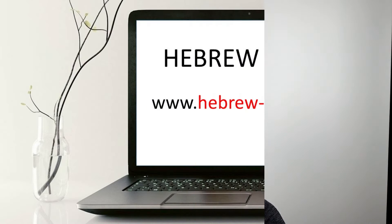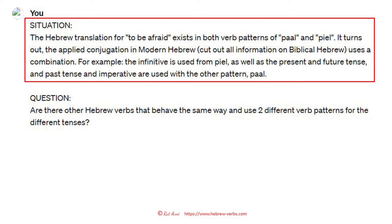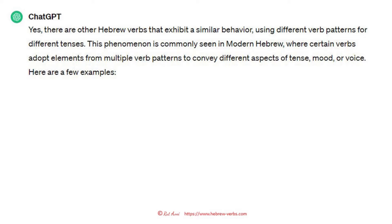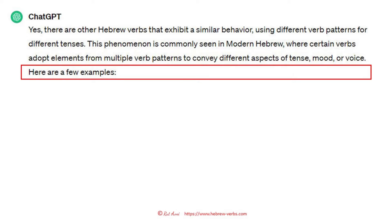So this is how it went, this is how I approached ChatGPT. I first described the situation we had with the verb 'to be afraid' — that it exists in both verb patterns, paal and piel. And now the question: are there other verbs that behave the same way and use two different verb patterns for the different tenses? And ChatGPT says yes, there are other Hebrew verbs that exhibit a similar behavior. This phenomenon is commonly seen in modern Hebrew. Here are a few examples.